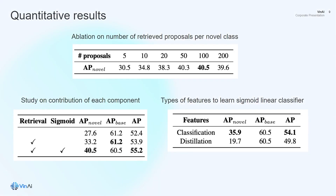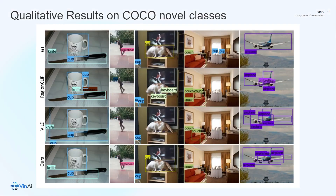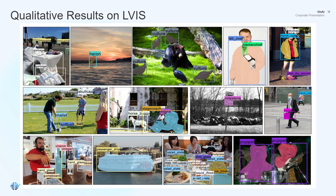We also performed ablation studies on the number of retrieved proposals for novel classes, the contribution of each proposed component, and types of features for learning the sigmoid classifier. Finally, we show some qualitative results on the COCO and LVIS benchmarks for visual comparison. Thank you for listening.